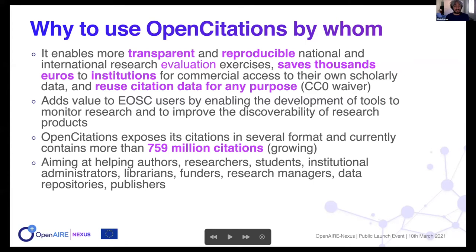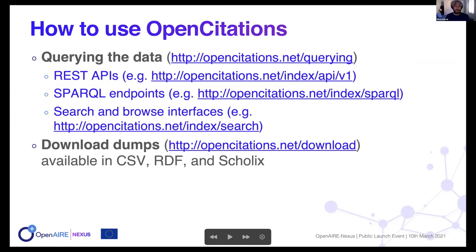Our goal is to add value for reaching the specific goal of monitoring and discoverability. Currently we have more than 759 million citations in our system — a number now growing thanks to recent actions from publishers such as Elsevier and the American Chemical Society, who recently released their reference lists in the open through Crossref. So this number will grow a lot in the next months. Our goal is to help any person involved in research monitoring — researchers, authors, students, administrations, and librarians — so there is a huge amount of users within the scholarly community who can benefit from our services.